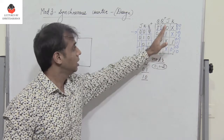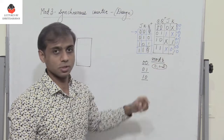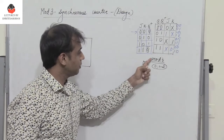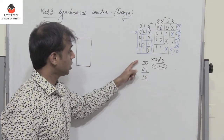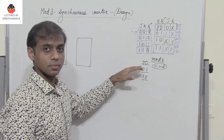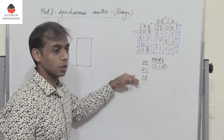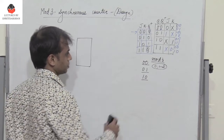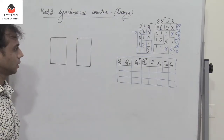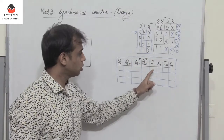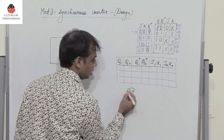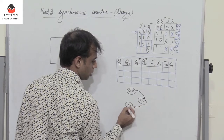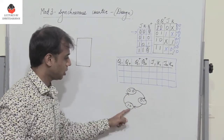Q indicates the current state and Q+ indicates the next state, and these are the corresponding J and K inputs. Now, the counter should change from 00 to 01, then from 01 to 10, and then again from 10 back to 00. So let us determine what the J and K inputs should be for each of these transitions.